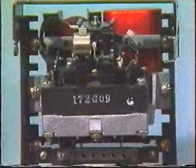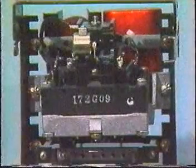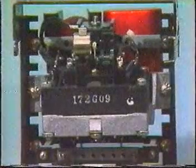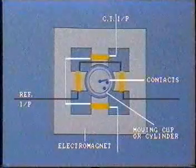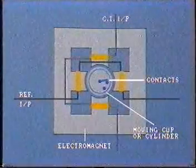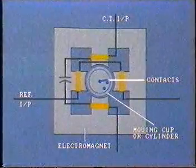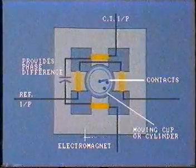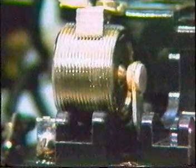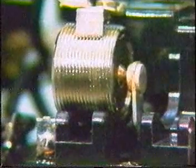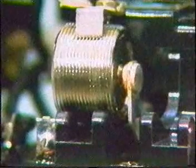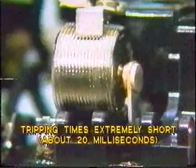In this particular relay, the instantaneous overcurrent element is of a different type — it works on the induction cup principle and is quite similar to the directional unit. The secondary current from the CT is passed through electromagnetic windings. A capacitor is wired into the circuit of one of the coils so as to provide a phase difference between the two fluxes and, in turn, produce turning motion on the cylinder. The spring restrains movement of the cylinder. However, as soon as the current flowing through the coils increases above the set pickup value, the induction cylinder will rotate and close its trip contacts. Only a few millimeters of rotation are required, so tripping times are extremely short — about 20 milliseconds.